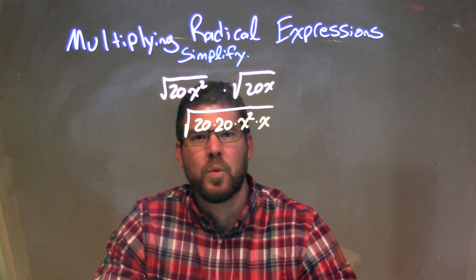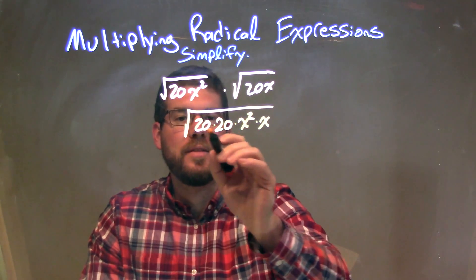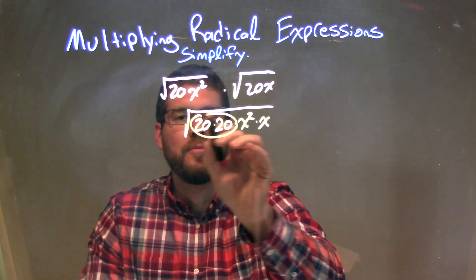Well, I could break down 20 times 20, but right there, I know my goal is seeing pairs. I have a pair of 20s right there, right? So, I'm going to circle that pair and kind of be done with that.